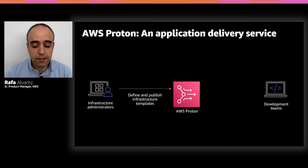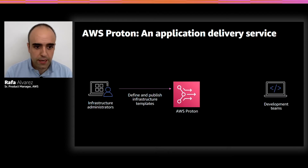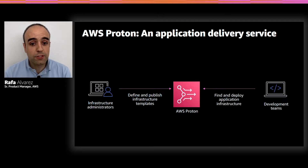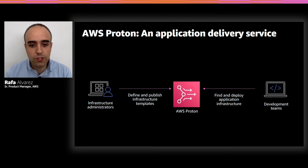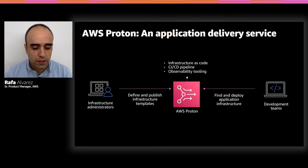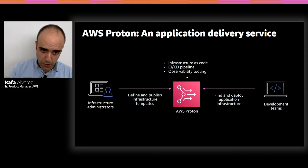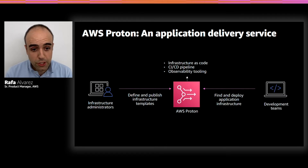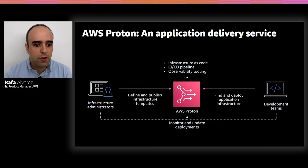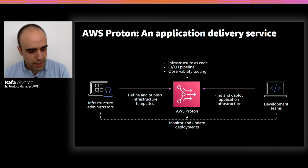Infrastructure administrators interact with AWS Proton by defining and publishing templates for what their architecture looks like — the whole infrastructure, the pipeline, the observability tooling. Developers on the other side can log into AWS Proton, find those templates, choose the one that is best for their project, and use it to deploy their application. Because Proton is sitting in the middle, it's able to talk to your infrastructure as code tool like CloudFormation, your CI/CD pipeline like CodePipeline, and your observability tool like CloudWatch to set everything up, deploy the code, and leave you with a service that is up and running.